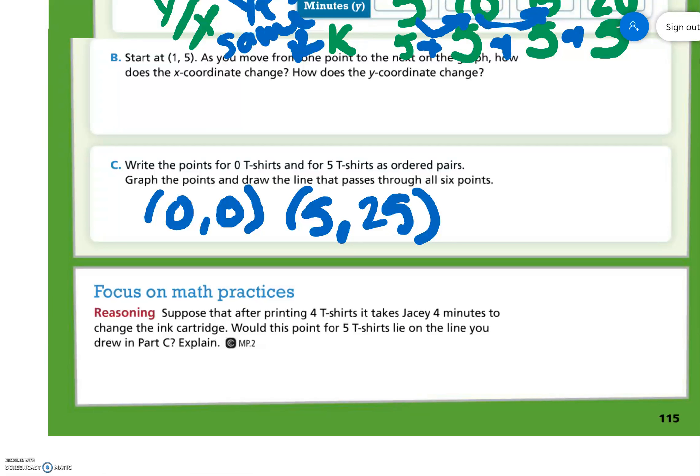Suppose that after printing 4 t-shirts, it takes JC 4 minutes to change the ink cartridge. Would this point for 5 t-shirts lie in the line you drew in point C? Explain.